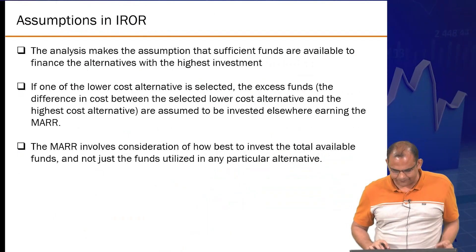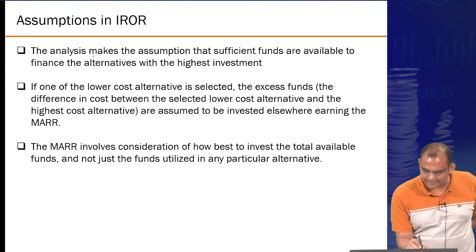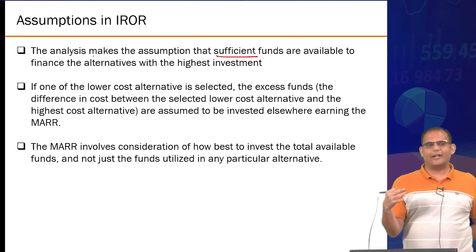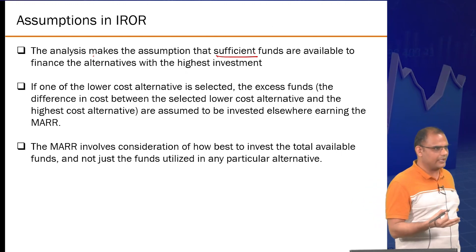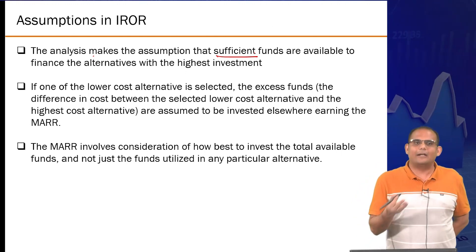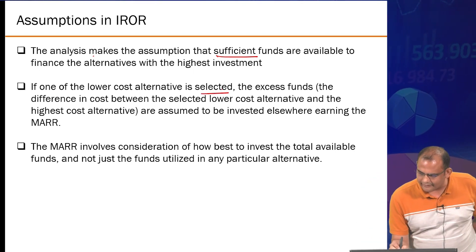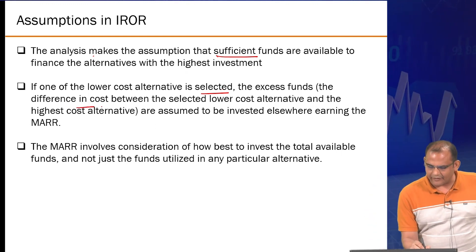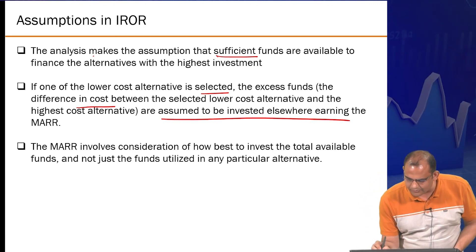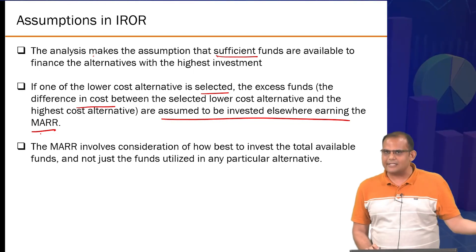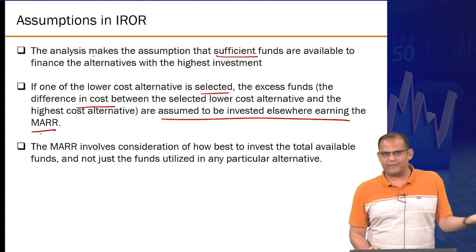These assumptions hold true: the analysis assumes that sufficient funds are available to finance the alternative with the higher investment. If one alternative costs 40,000 and another costs 80,000, you should have at least 80,000 rupees, otherwise this analysis makes no sense. If the lower-cost alternative is selected, the excess funds — the difference in cost between the two alternatives — is assumed to be invested elsewhere and earning at least your minimum acceptable rate of return. The MARR thus provides the range of funds available and the maximum optimal answer.